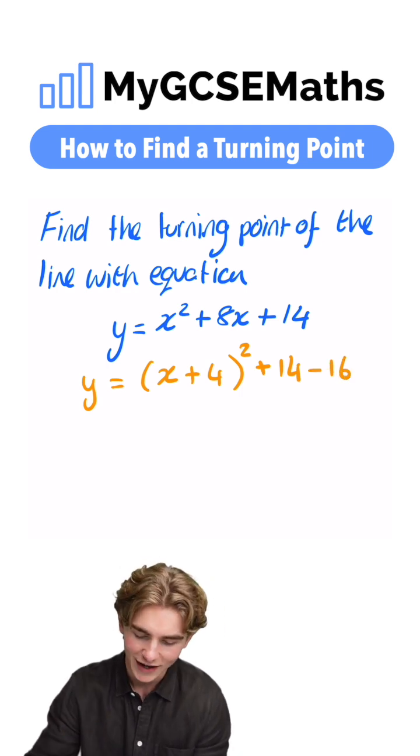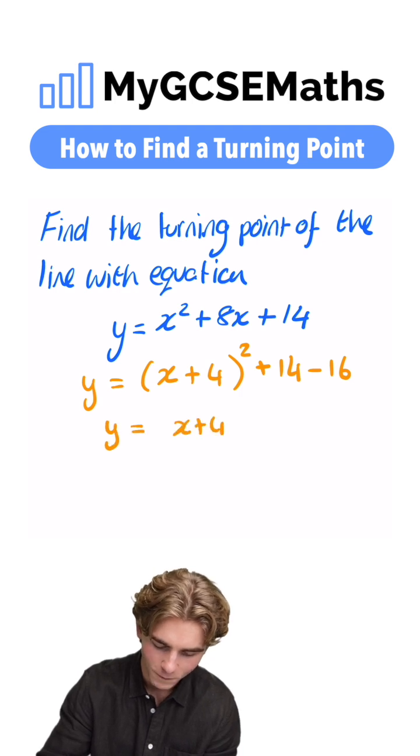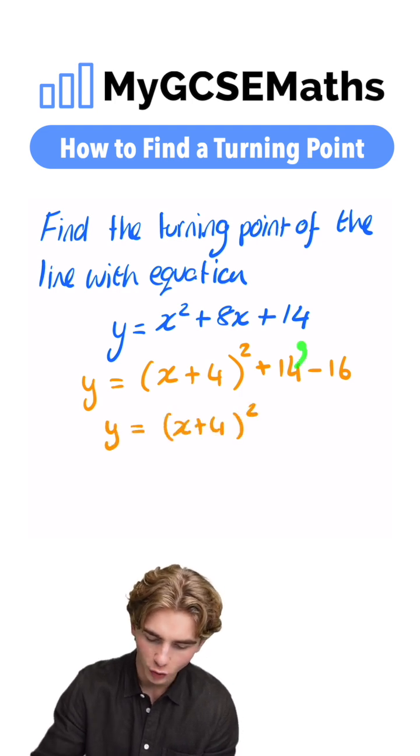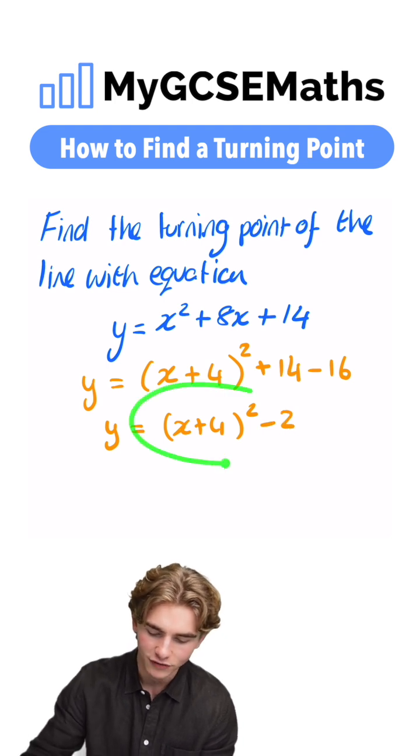Next step, we can simplify, bringing these two together. So we're going to have y equals x plus 4 squared. 14 subtract 16 is going to be negative 2, and now we can read our turning point.